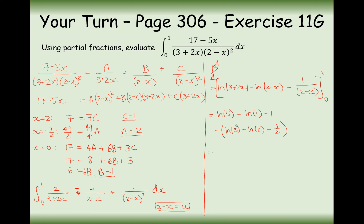Remember, we're subtracting the whole of the x equals 0 substitution, so there are some double negatives. We get ln 5 minus ln 3, then a double negative gives plus ln 2, and then minus 1 plus 1/2 gives minus 1/2. So the combined logarithm is ln(10/3), giving ln(10/3) minus 1/2. Note that ln 1 equals 0, which has already been cancelled.